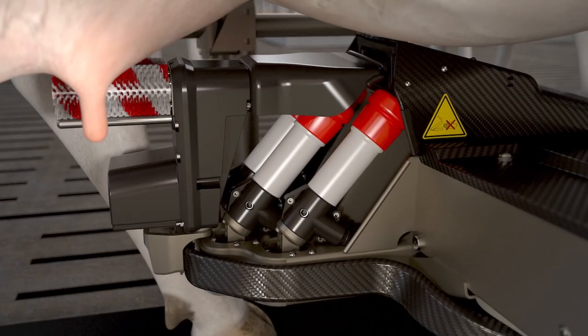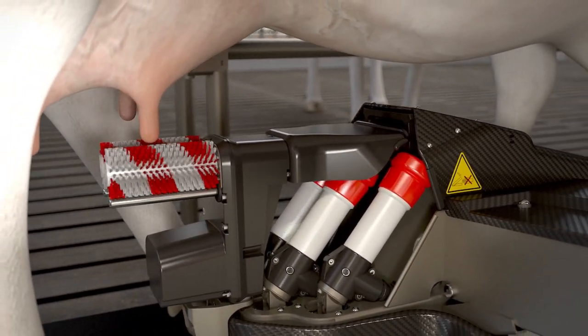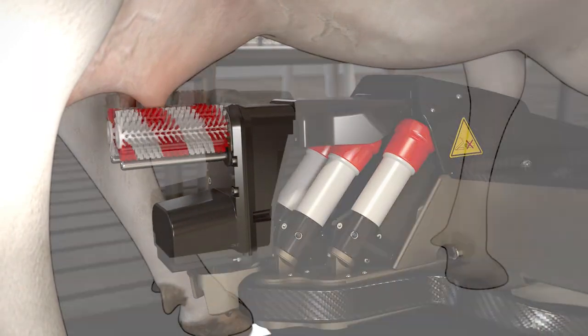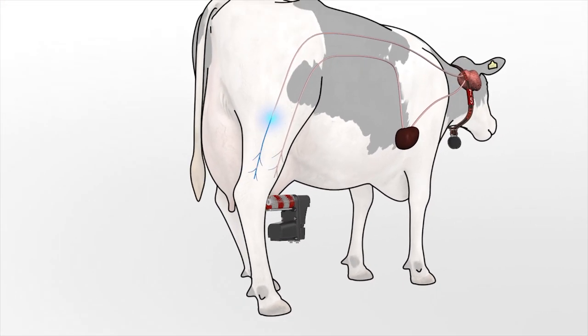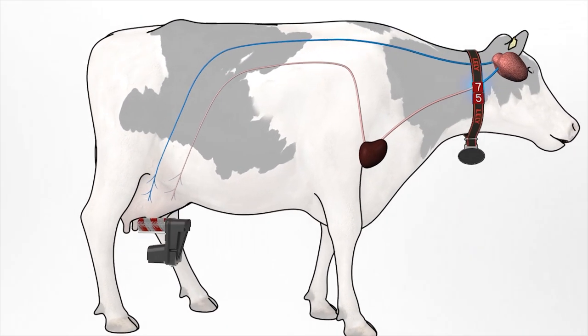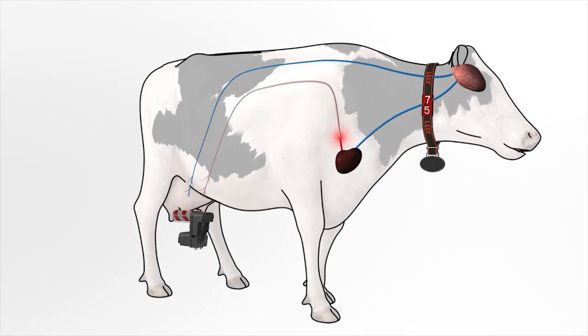The teat cups remain clean because they only come into contact with clean teats. Brush cleaning also stimulates the nerves in the teats. The stimulation goes through the spinal cord to the pituitary gland in the cow's brain.